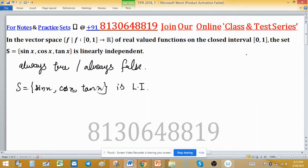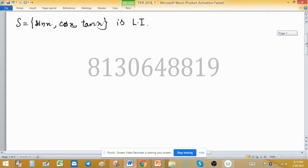We will check this by the Wronskian. The Wronskian W can be written as a 3 by 3 matrix with sin x, cos x, tan x.